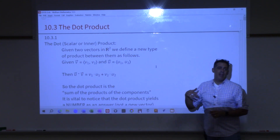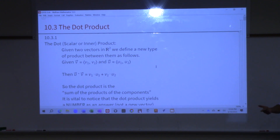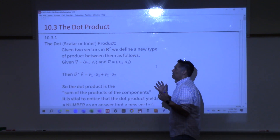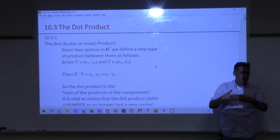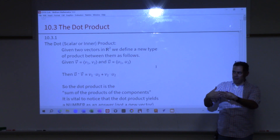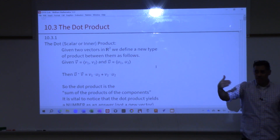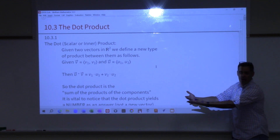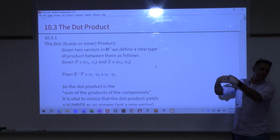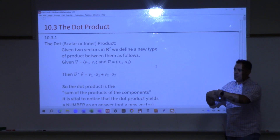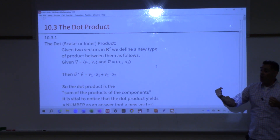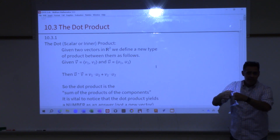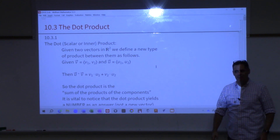We're going to go through the dot product today, and the next multiplication we'll learn next time is called the cross product. If I take two vectors and multiply them, what do you think my answer should be? You add numbers you get numbers. Vectors — you add vectors you get vectors, subtract vectors you get vectors, scale a vector you get a vector. But when you multiply two vectors with the dot product, you get a number.